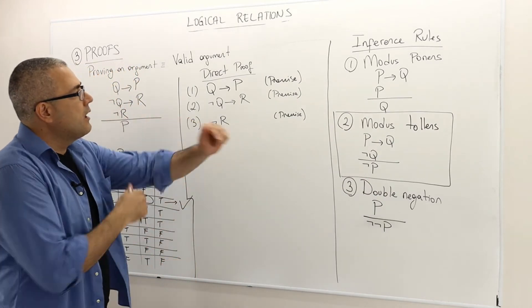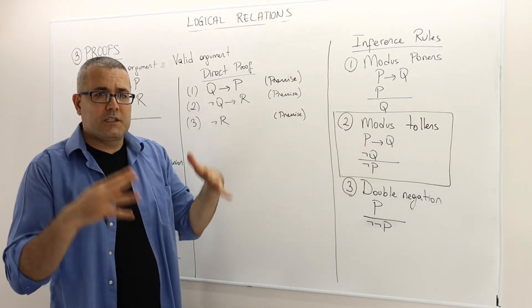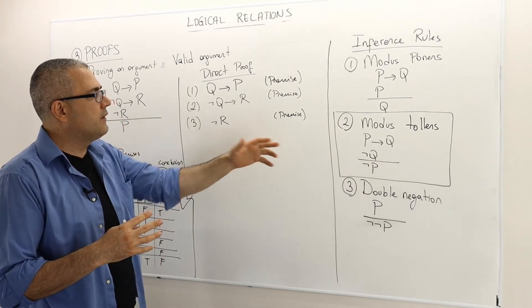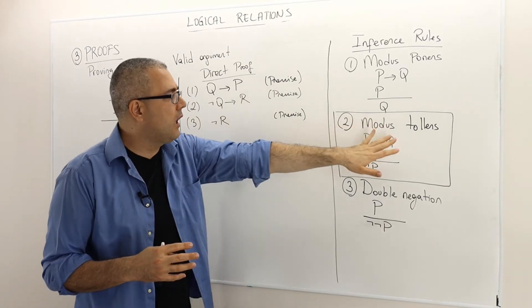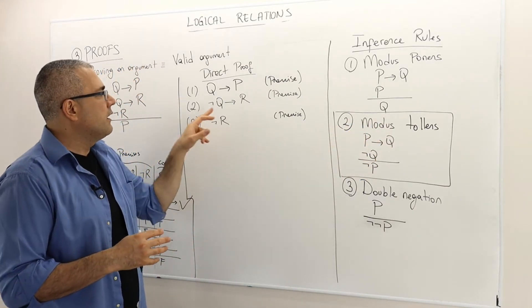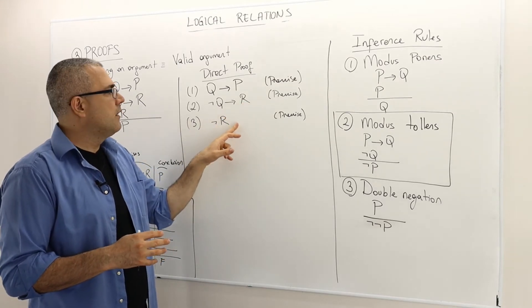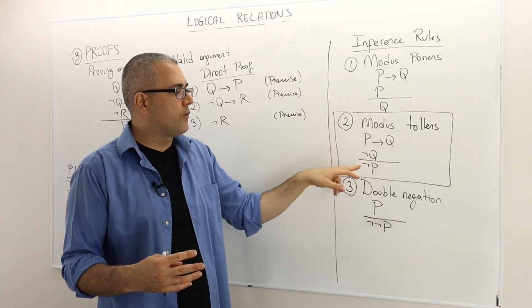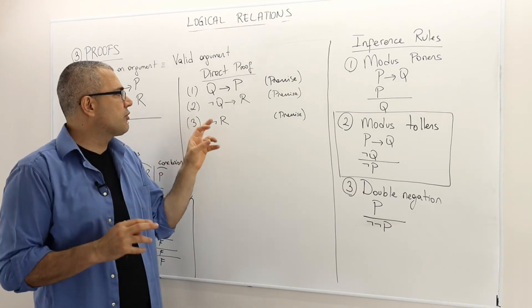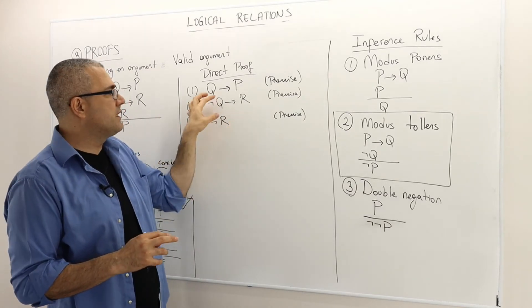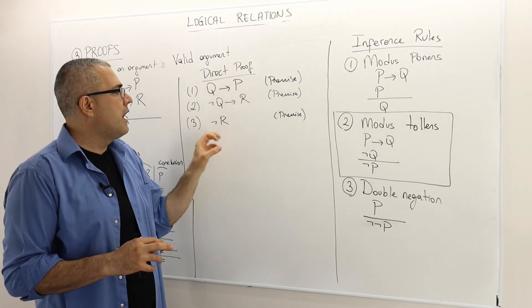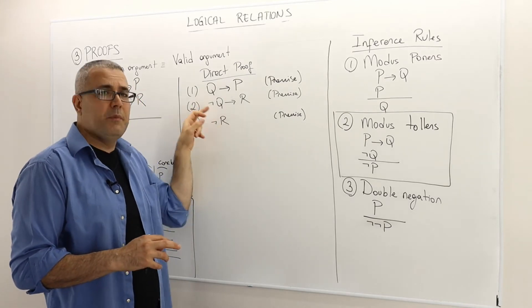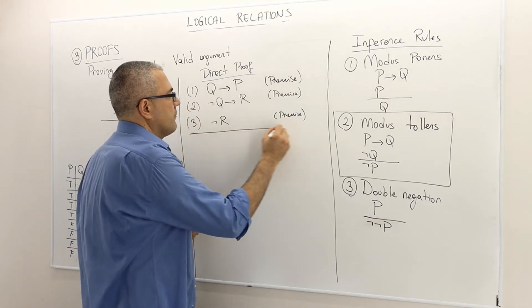So now I want to prove P. So how can I do that? Remember, I have those shortcuts, so let's use them. So which one would be the useful one? Well, it seems like the modus tollens function can be applied into premise number two and three, right? So modus tollens says, P implies Q, not Q, therefore not P. So here I have a similar structure. Not Q implies R. So this is like P. This is like Q. And then not R. So this is like not Q. So therefore not P, which means not, not Q.